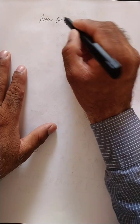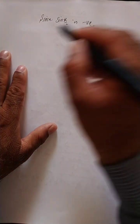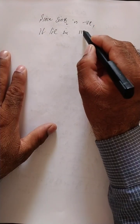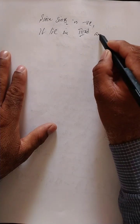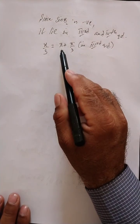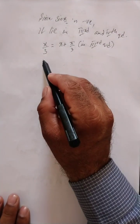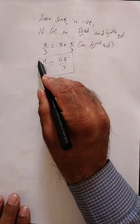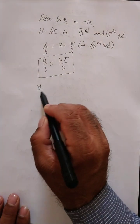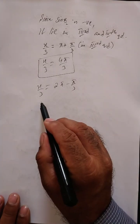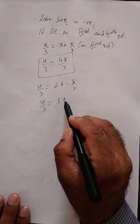Since sin(x/2) is negative, it lies in the third and fourth quadrant. In the third quadrant: x/2 = pi + pi/3 = 4pi/3. In the fourth quadrant: x/2 = 2pi minus pi/3 = 5pi/3. So we now have four results for x/2.